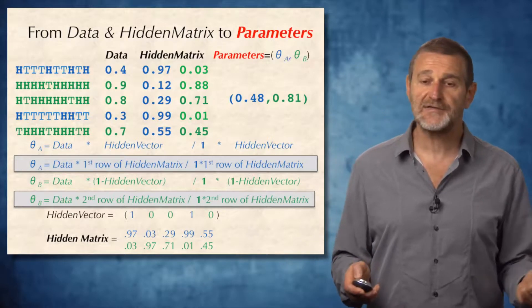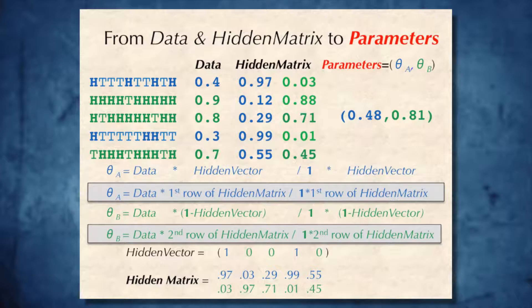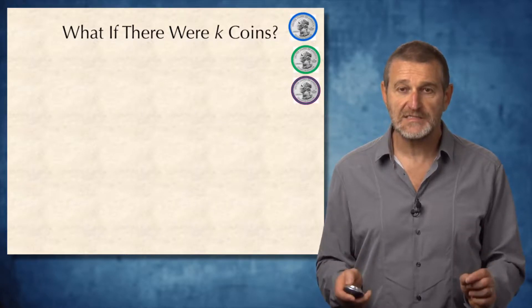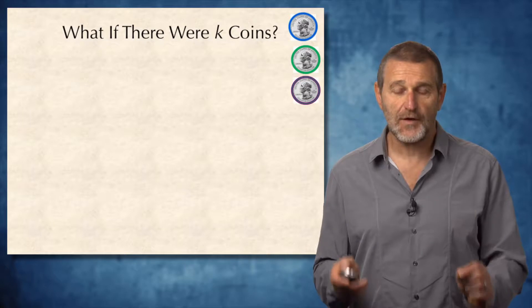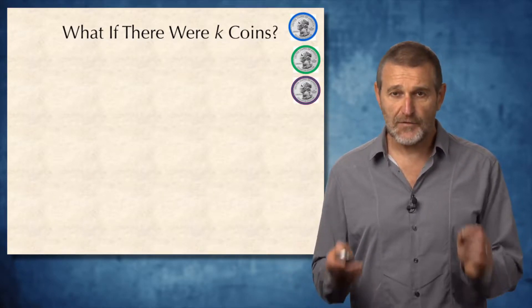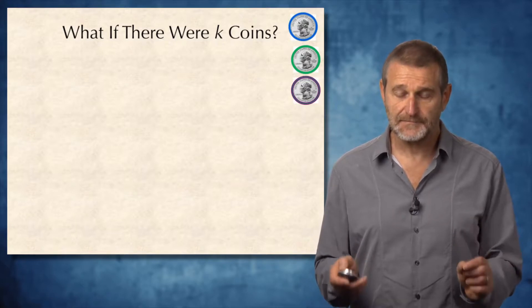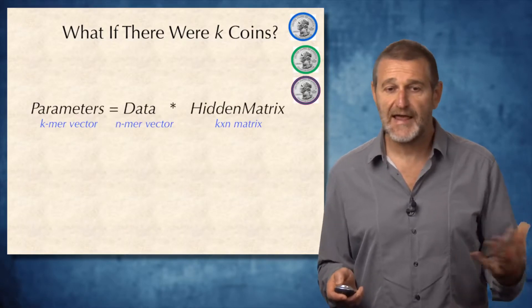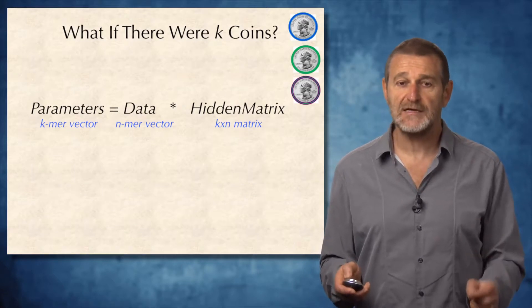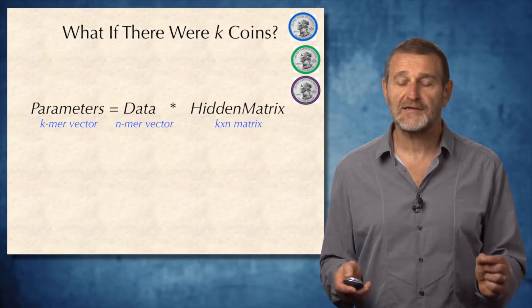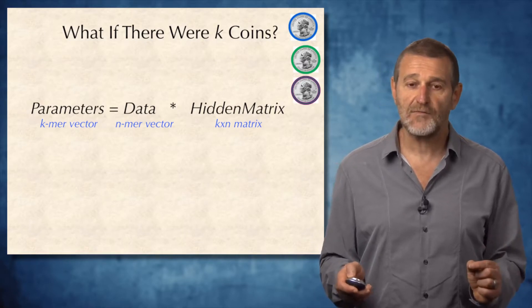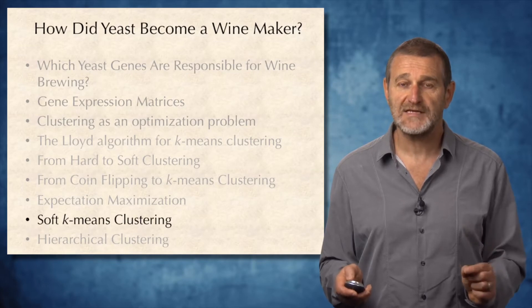In this case, the parameters will be the ones shown on this slide: for the blue coin, 0.48, and for the green coin, 0.81. The only question left to address before we move to soft k-means clustering is what to do in our coin flipping experiment if there were k coins — for example, three rather than two coins. If you watch how the parameters were derived using dot products, the parameters representing a k-mer vector can be computed simply as the product of an n-mer vector data by the k-times-n hidden matrix. This simple, elegant formula will help us move toward soft k-means clustering in the next segment.